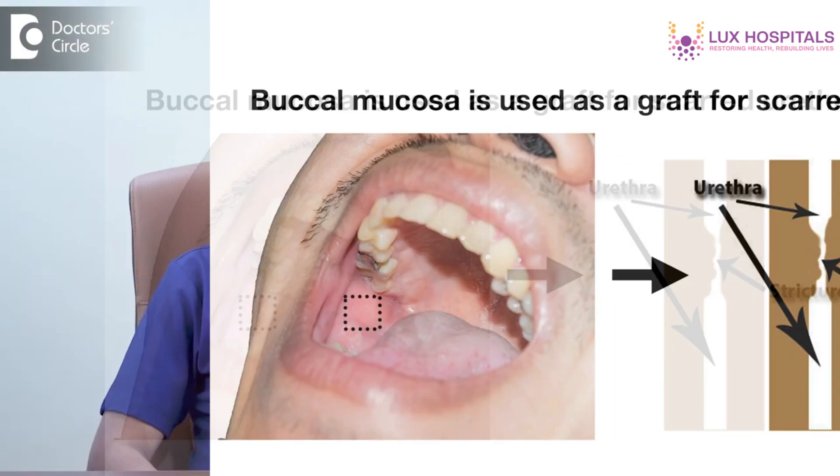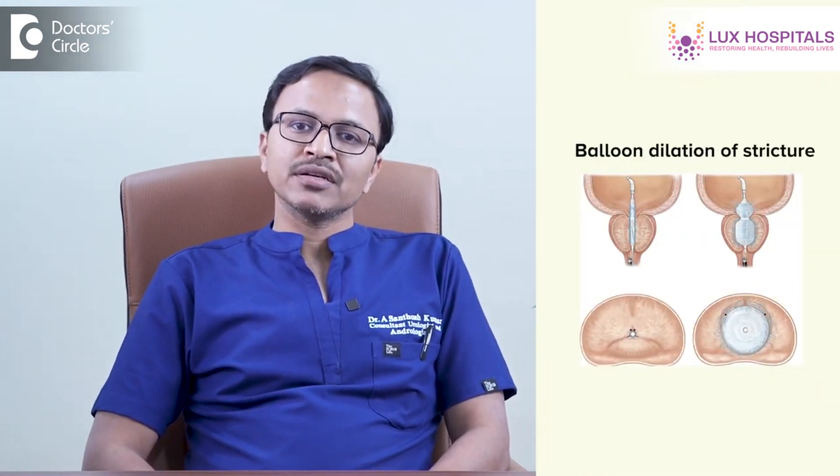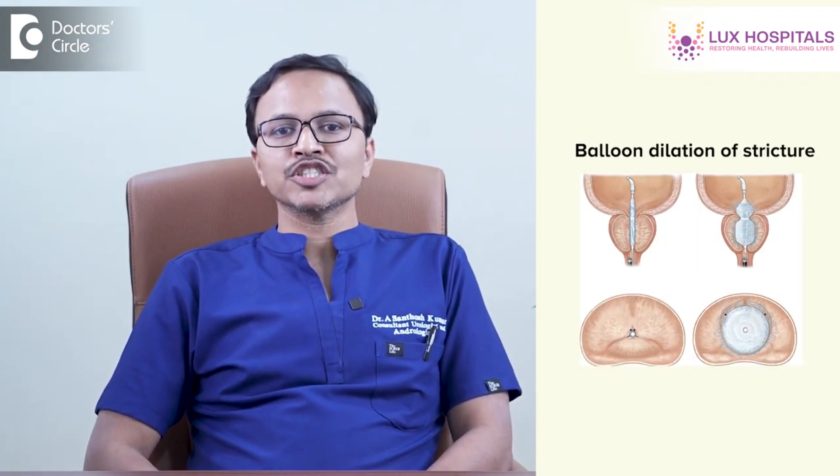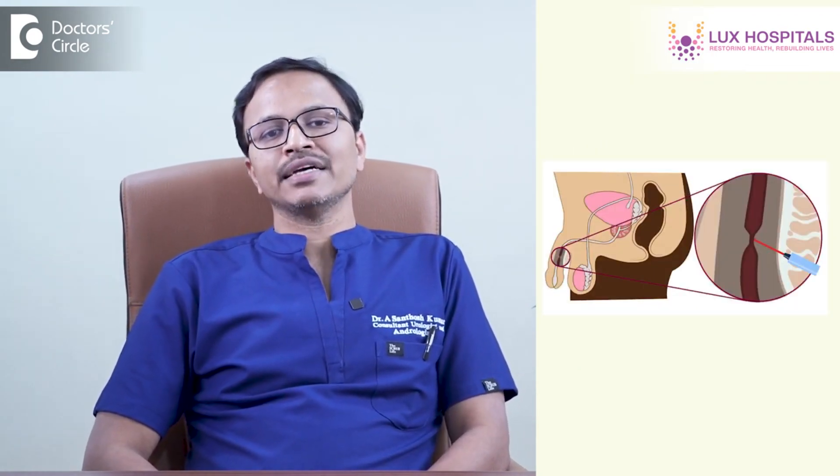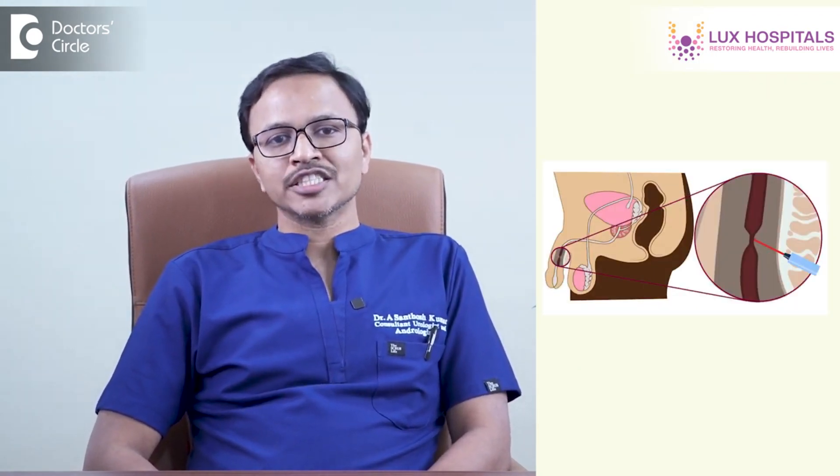The graft can be taken from the prepuce or other sources to perform substitutional urethroplasty, which is an open surgery. There are also advanced procedures — if the patient is unfit for surgery, we can perform balloon dilatation of the stricture. Nowadays we are also doing laser stricturotomy, where we use a laser energy source to incise the stricture and allow the passage to flow freely. These are the various options we provide based on the patient's symptoms.